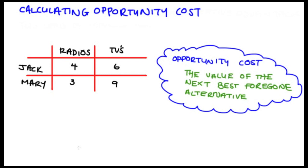In this case I've got Jack and Mary who can make radios or TVs. In these sorts of questions you often get countries or sometimes firms, and the point is that the numbers in the table represent the maximum amount of each of the goods that either of the individuals, in this case Jack and Mary, can make.